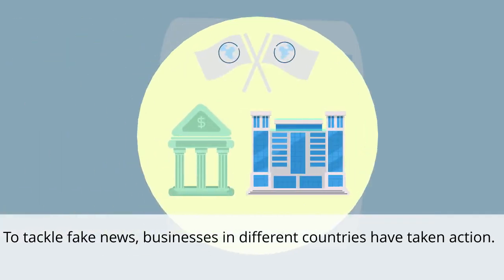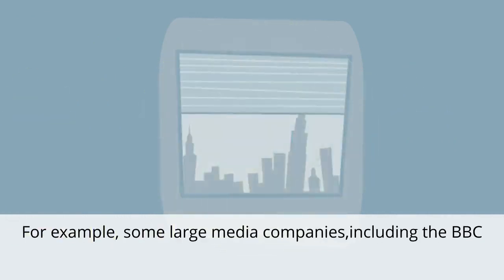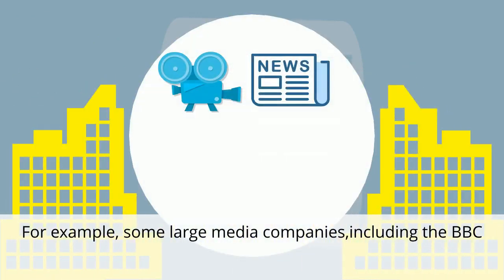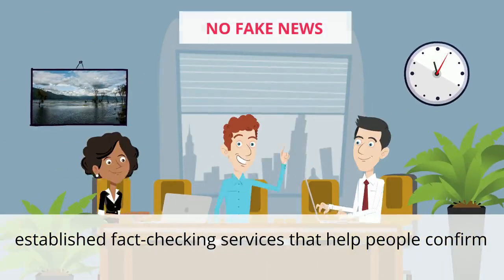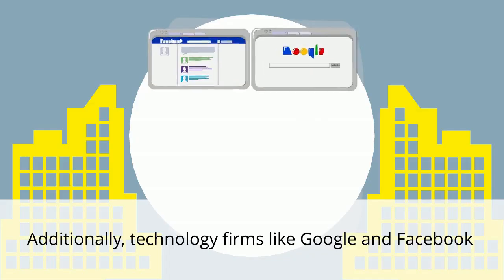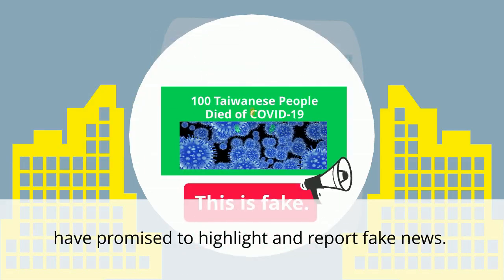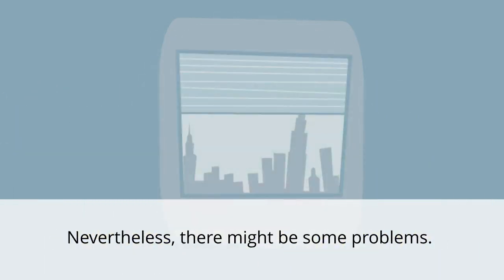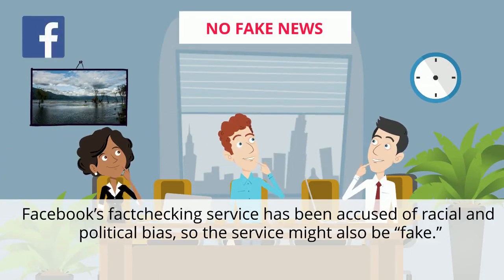To tackle fake news, businesses in different countries have taken action. For example, some large media companies, including the BBC and the Washington Post, established fact-checking services that help people confirm whether a news story is true. Additionally, technology firms like Google and Facebook have promised to highlight and report fake news. Nevertheless, there might be some problems — for example, Facebook's fact-checking service has been accused of racial and political bias, so the service might also be fake.